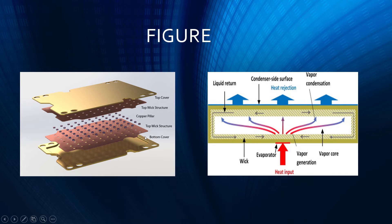This is the actual diagram showing how the vapor chamber looks. There is a top cover, a top wick structure, and copper pillars — which may or may not be present depending on the design. There are many types of vapor chambers, such as groove type, sintered type, and novel types. There is also a bottom wick structure and a bottom cover. The whole design is within 3 mm thickness.